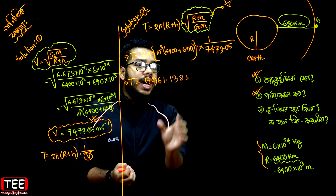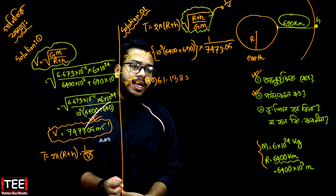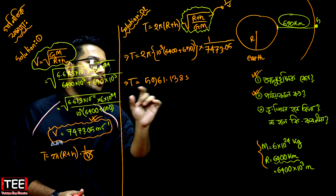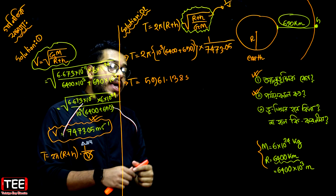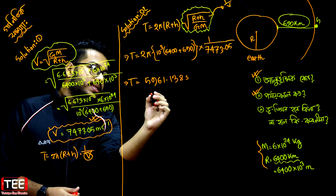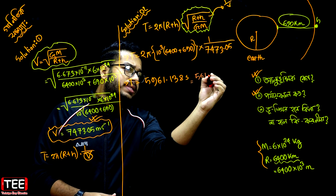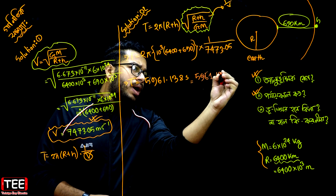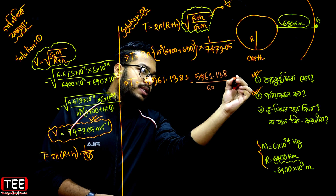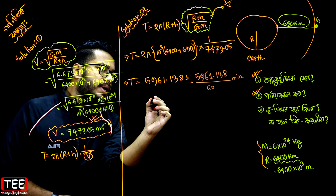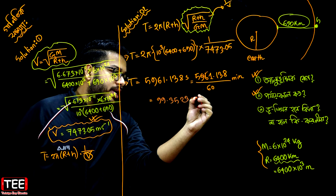It is true that we can get the same result and convert it. So the result is that we can convert in minutes. This is equal to 5961.138 divided by 60 minutes. So the result in minutes is 99.3523 minutes.